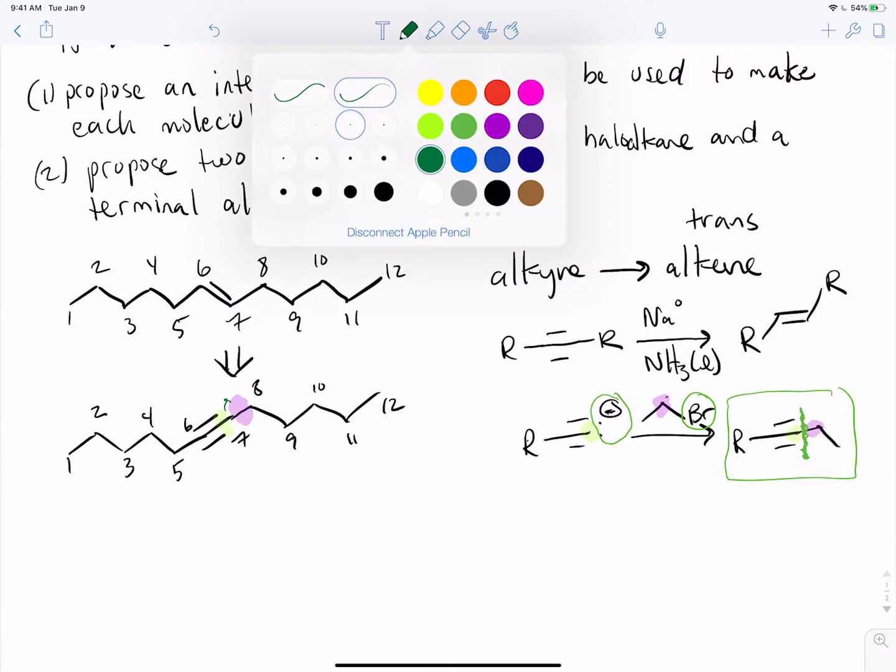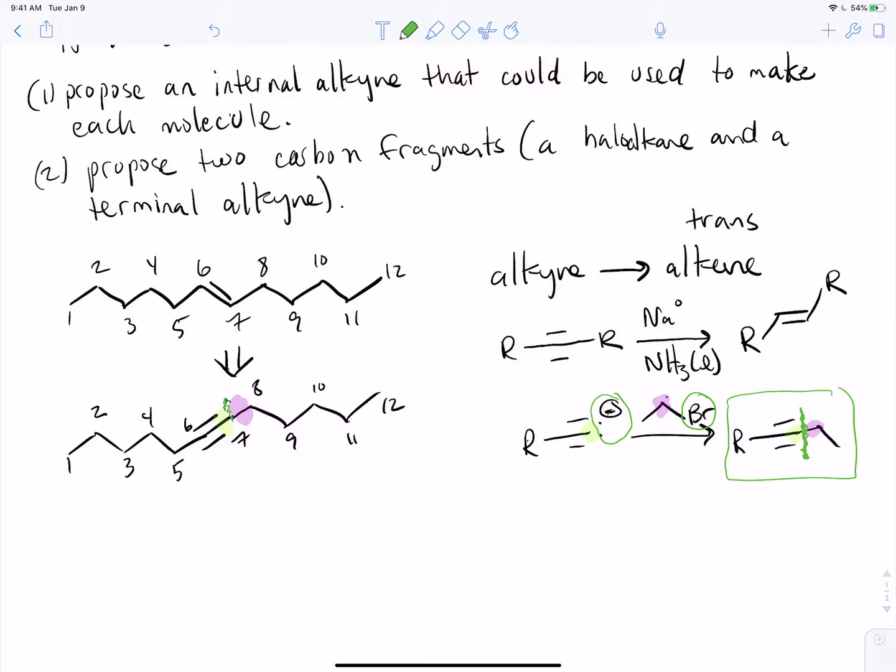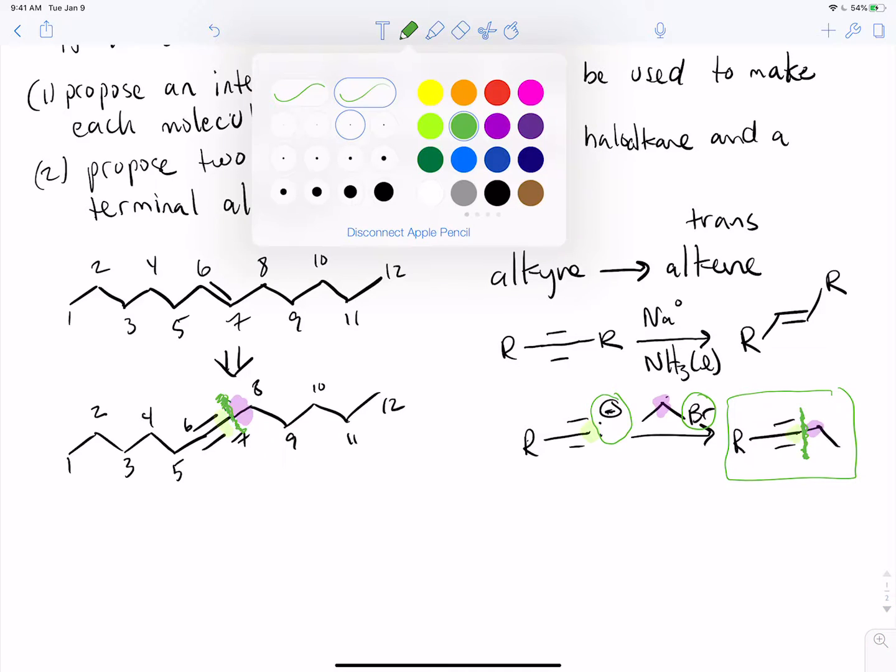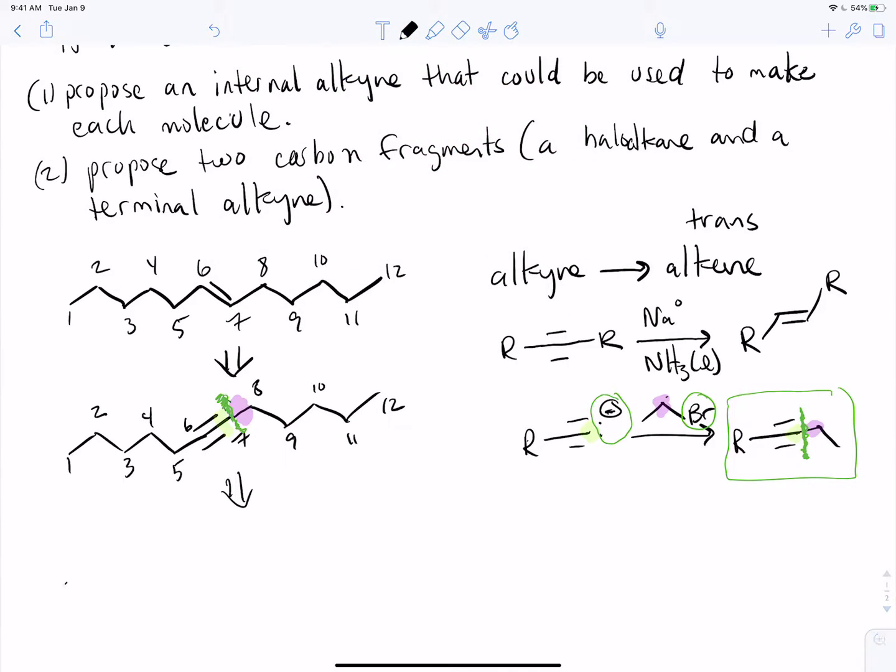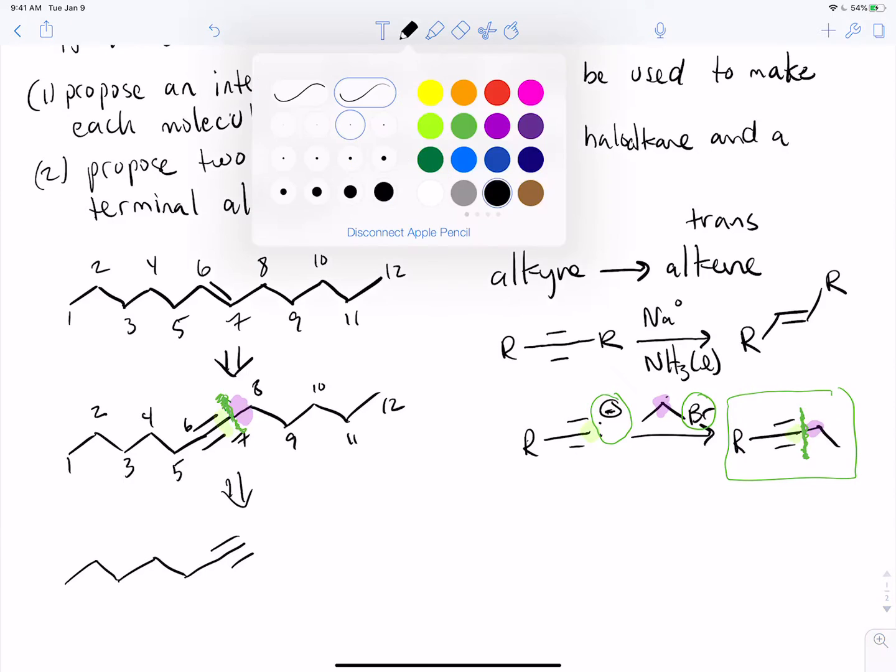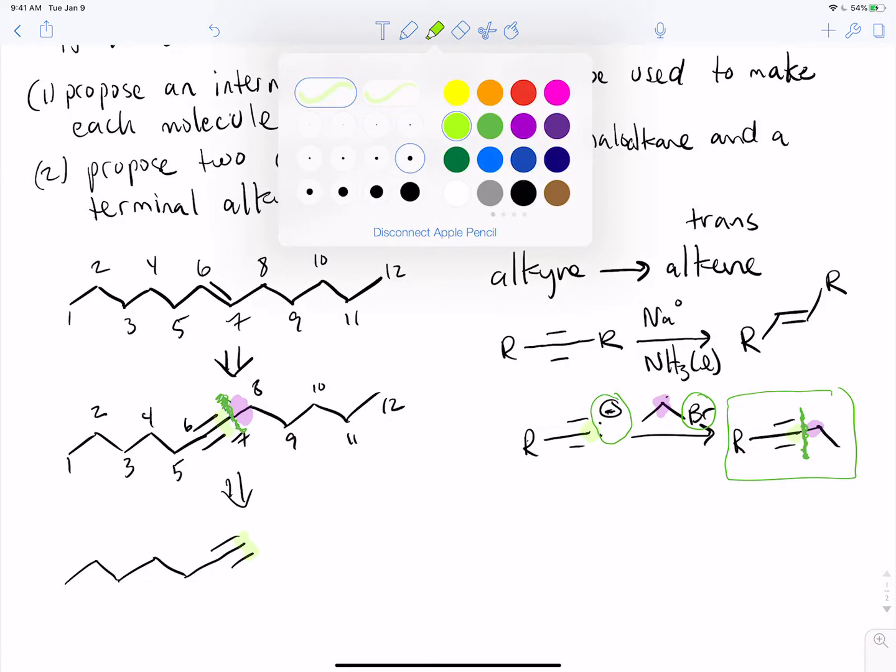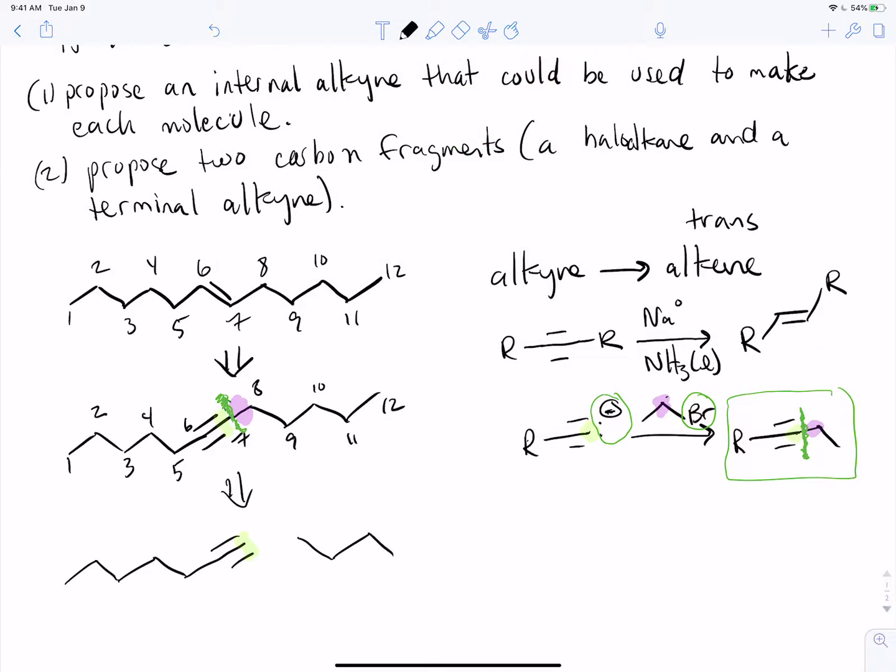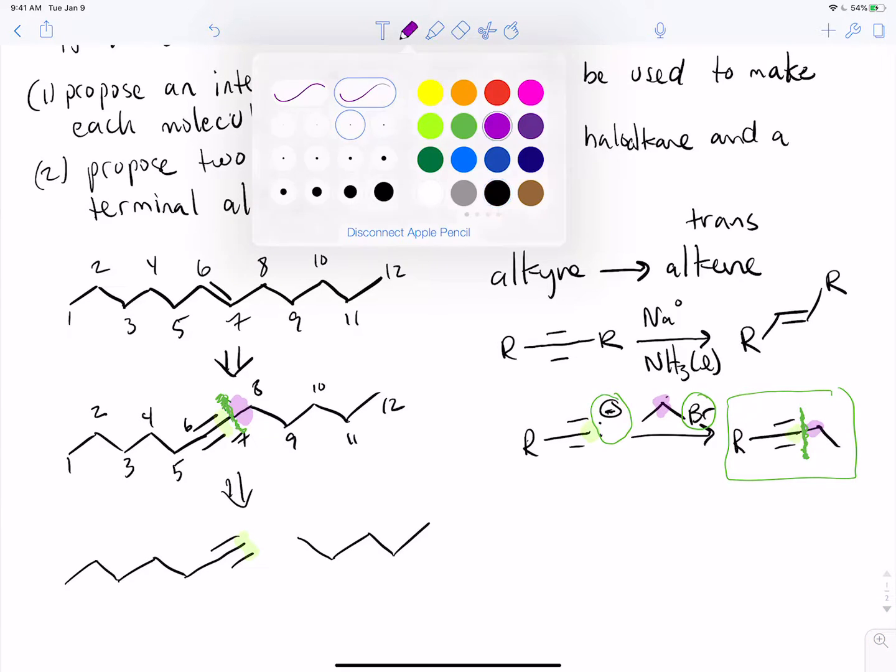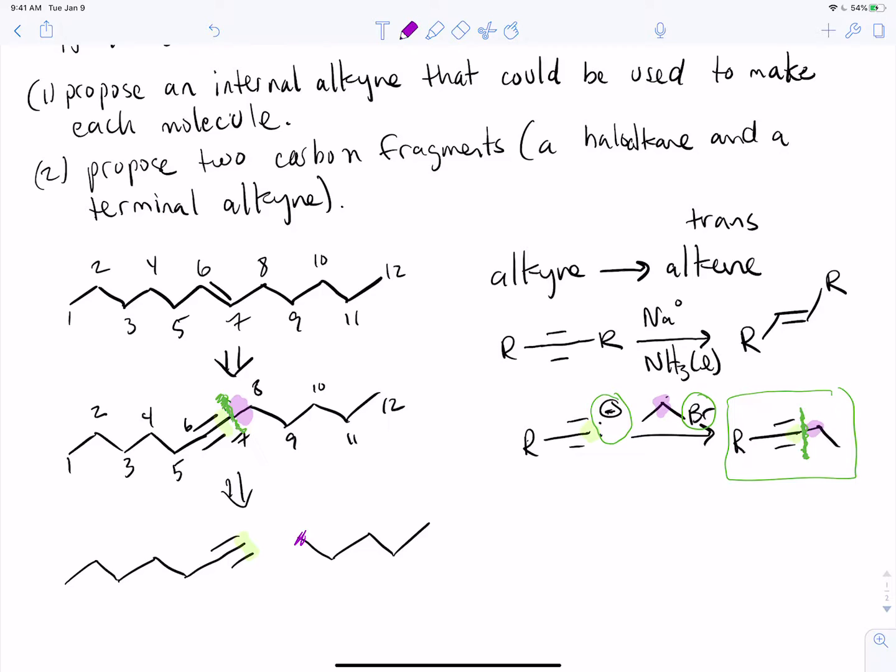We can come back over here and say, what happens if we cut it right there? We're going to snip it in our mind. That means on one side, we're going to have this, and on the other side I'm going to have that.